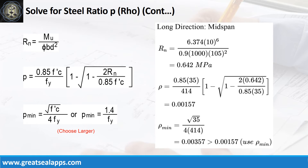Long direction, mid-span: moment equals 6.374 kN·m/m. Resistance factor equals 0.9. b equals 1,000 mm. d equals 105 mm. The beam design ratio RN equals 0.642 MPa. Reinforcement ratio ρ equals 0.00157. Use ρ minimum of 0.00357.